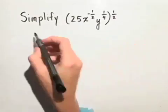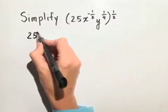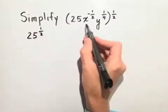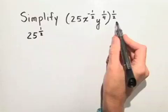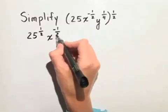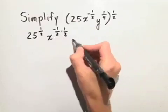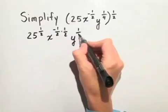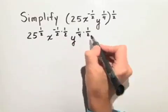So first, let's start with the 25. We raise 25 to the 1 half power, x to the negative 1 half raised to the 1 half. Again, we multiply the exponents, and y to the 1 fourth times 1 half.